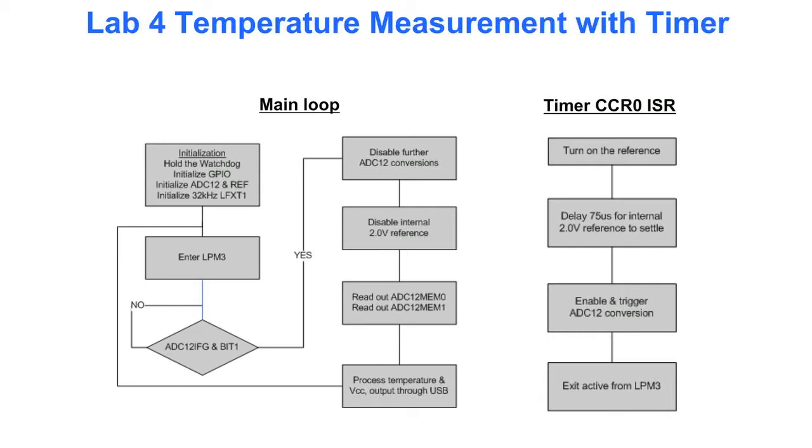We go ahead and delay 75 microseconds for the internal reference to settle. We enable and trigger the conversion, and then we exit active from LPM3. So what we're doing is, in the timer, we're doing the 2 second delay between samples, and we're doing the 75 microsecond settling time here.